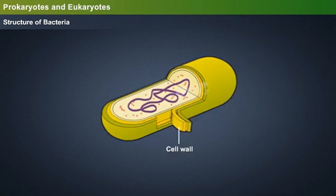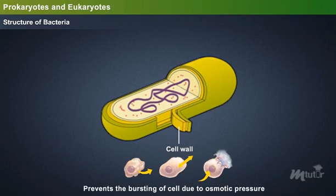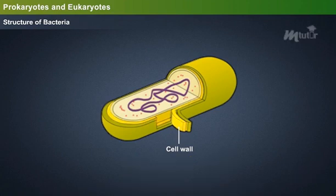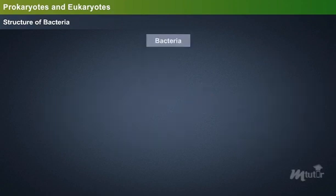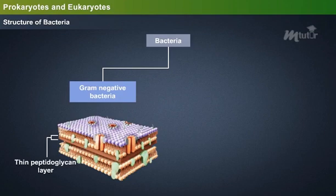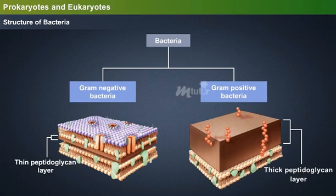The layer next to the capsule is the cell wall. The cell wall maintains the cell structure and prevents the bursting of the cell due to osmotic pressure. Further, the cell wall contains peptidoglycan, which is composed of sugar and amino acids. Based on the composition of the cell wall, bacteria are divided as gram-negative bacteria, containing a thin layer of peptidoglycan, and gram-positive bacteria, containing a thick layer of peptidoglycan.